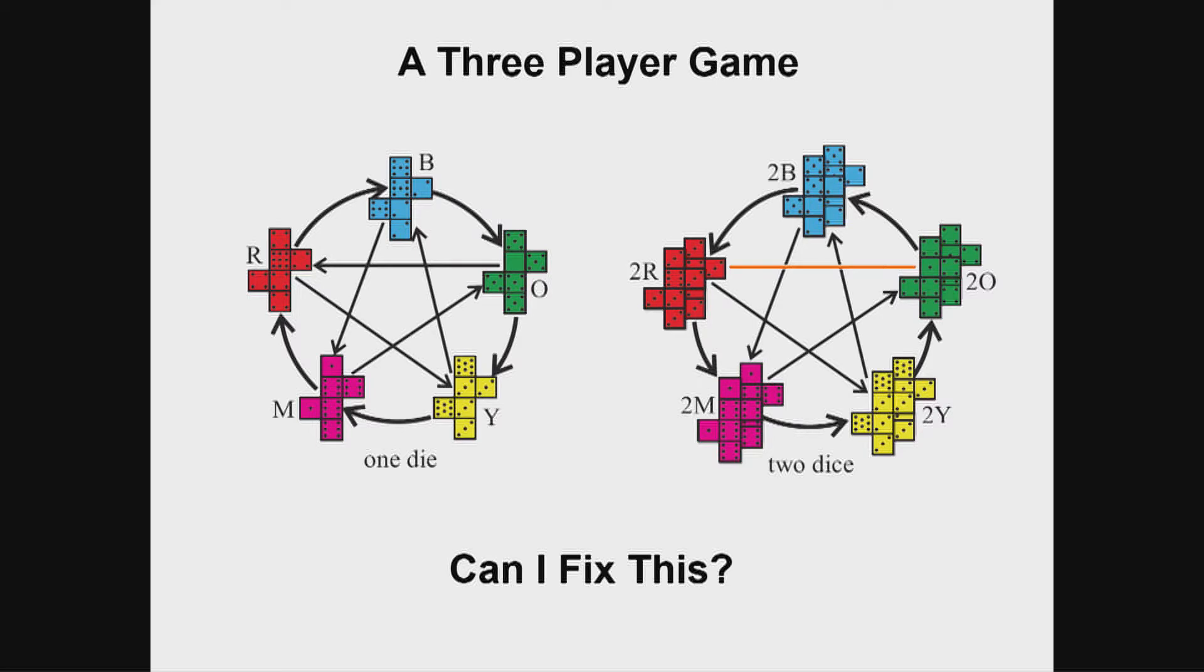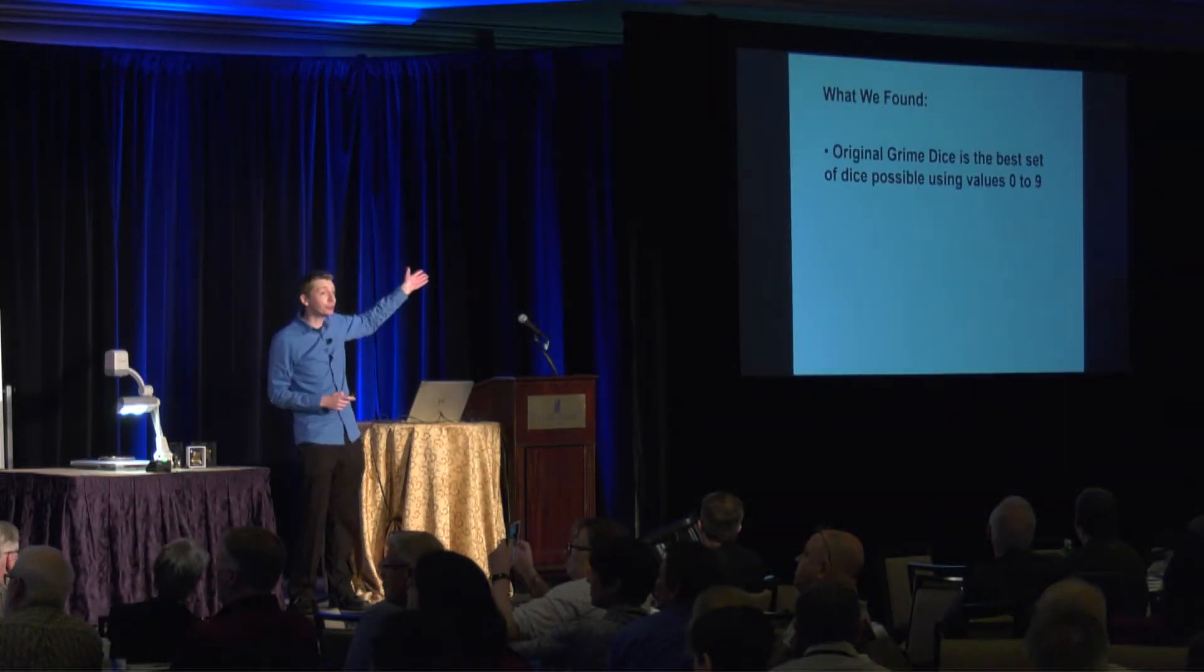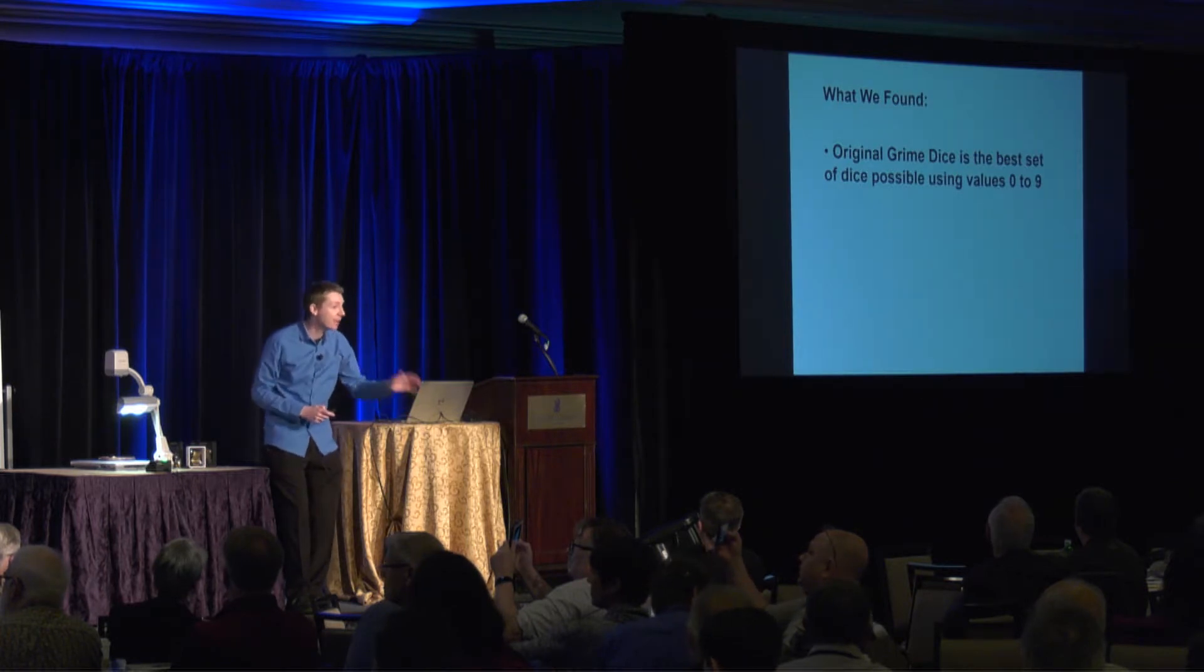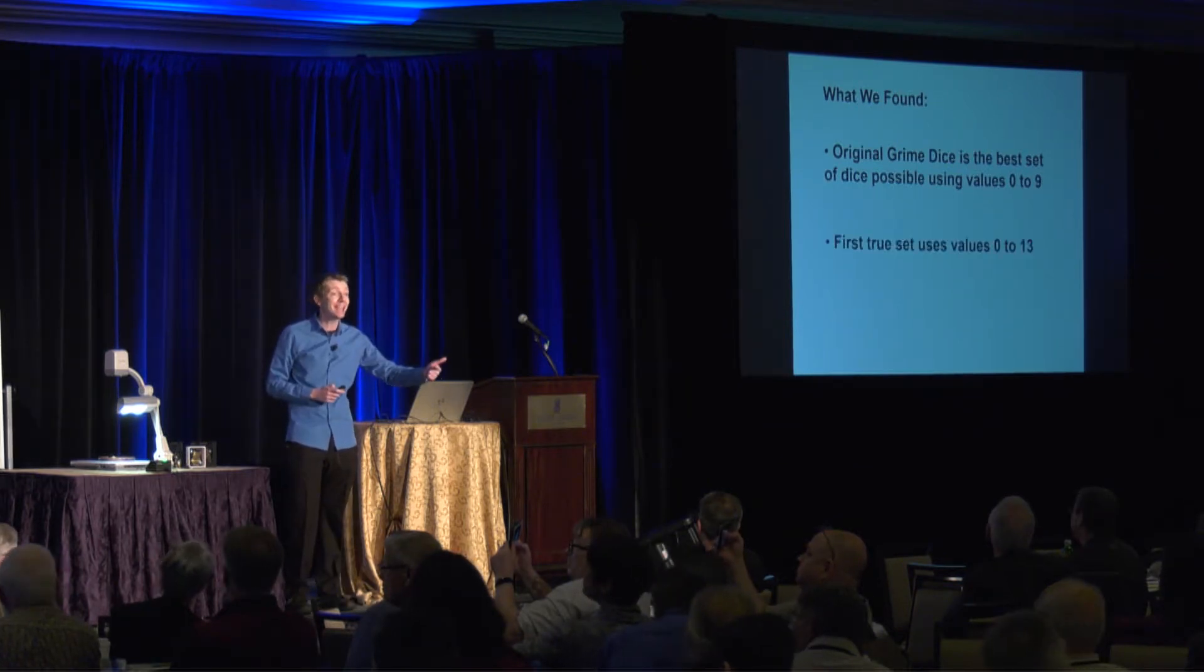So to cut a long story short, we ran a computer program, we looked for a computer search, which was a difficult problem in itself, because we're searching through all possible sets of five dice. But these are the conclusions. The original set is the best set I could have found using single digit values zero to nine.